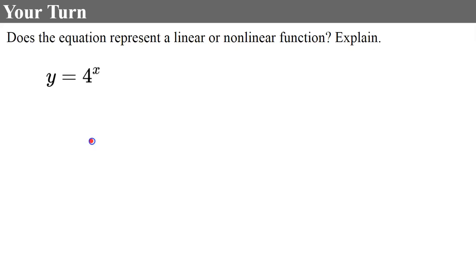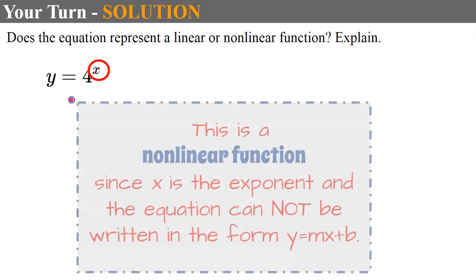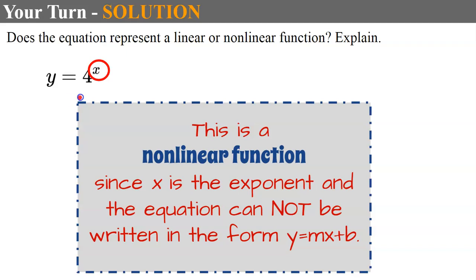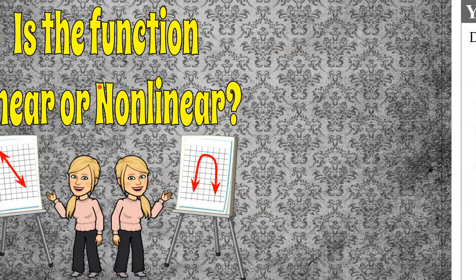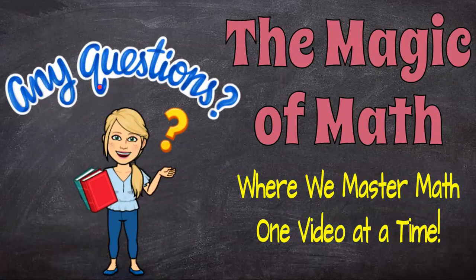Here's one more. The exponent is not 1 — the exponent is actually x itself. This is what we call an exponential function, and it's definitely not a line when graphed. This is a nonlinear function since x is the exponent and it cannot be written in the form y = mx + b. That's our lesson on linear or nonlinear functions — thanks for joining me at the Magic of Math, where we master math one video at a time.